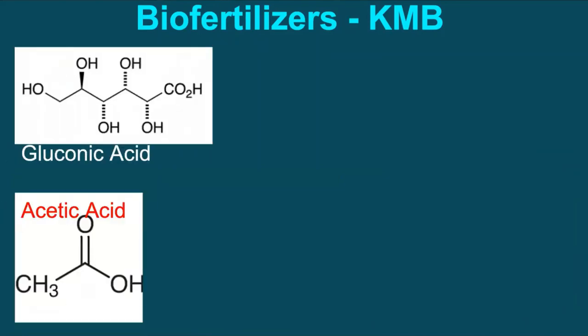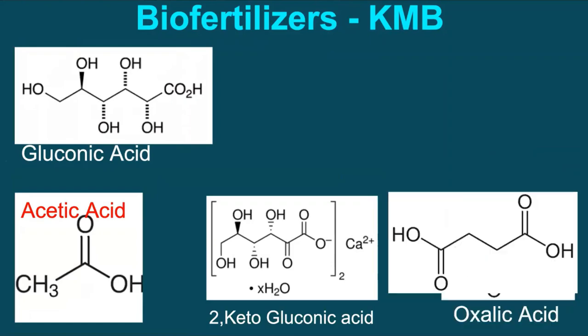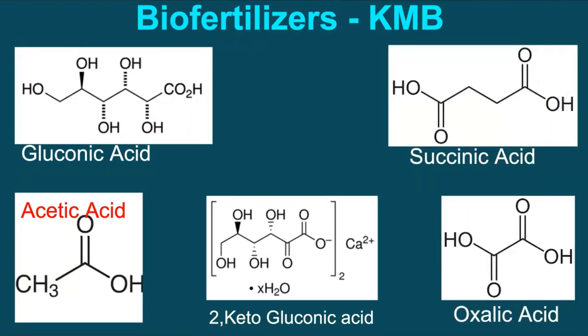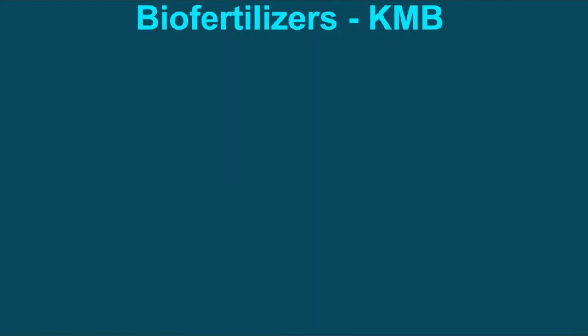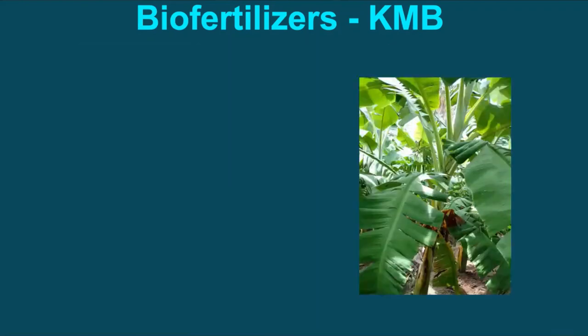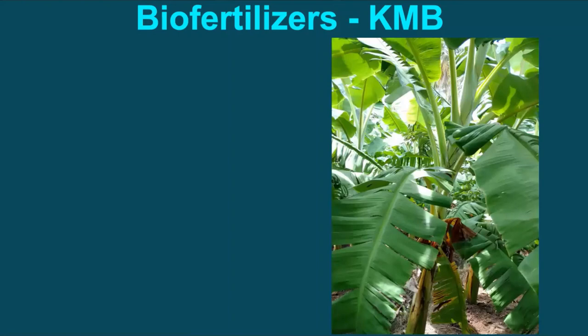With increase in the population of KMB, that is potash mobilizing bacteria in the soil, this secretes organic acids like gluconic acid, acetic acid, 2-ketogluconic acid, oxalic acid, succinic acid, etc. Similar to PSB, these acids bring down the pH of the soil and help to mobilize potash near the plant roots. This improves potash uptake, protects the plant from salinity injury, and also helps the plant against drought.